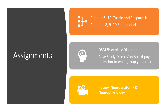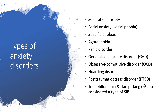We're also going to have a brief review of neuroanatomy and neurophysiology this week. There are multiple types of anxiety: separation anxiety, social anxiety, specific phobias, agoraphobia, panic disorder, generalized anxiety disorder, obsessive compulsive disorder, hoarding disorder, PTSD — which is kind of in its own category now — and then trichotillomania and skin picking, also considered a type of anxiety disorder and self-injurious behavior.